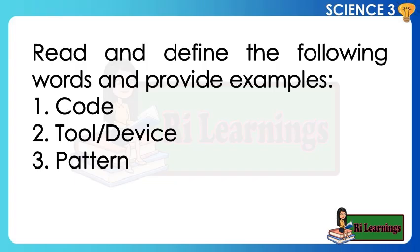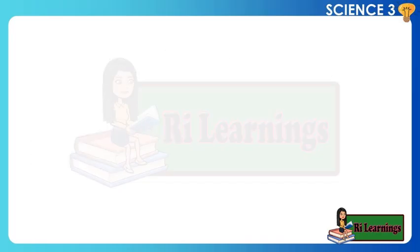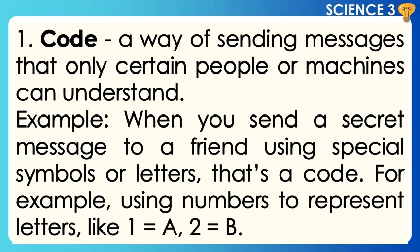Read and define the following words and provide examples: one, code; two, tool device; three, pattern. One, code: a way of sending messages that only certain people or machines can understand. Example: when you send a secret message to a friend using special symbols or letters, that's a code. For example, using numbers to represent letters like one equals A, two equals B.